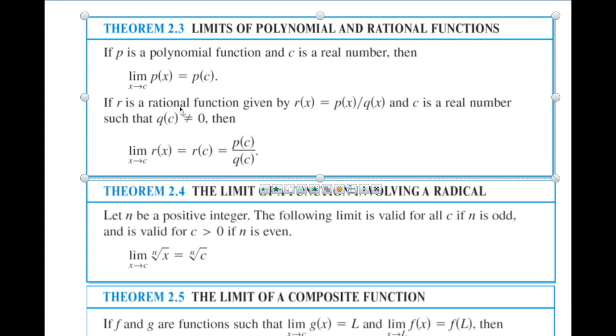Let n be a positive integer. This time, limits involving a radical. The following limit is valid for all c if n is odd and is valid for c greater than zero if n is even. That's basically saying you can't take the root of a negative number because it's imaginary. If you plug it in, as long as n is odd you can use direct substitution. If n is even, as long as c is positive you can use direct substitution.